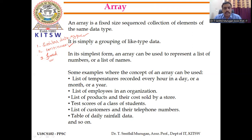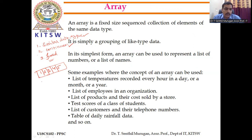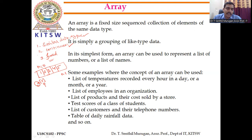For example, an array can be used to represent a list of numbers like 1, 2, 3, 4, 5 — all integer values — stored continuously in memory. The array is represented using index numbers, called the array index, starting with 0 up to n minus 1. For 5 elements, n equals 5, so indexing goes from 0 to 4. The array name can be anything, and the index represents the memory location where values are stored.